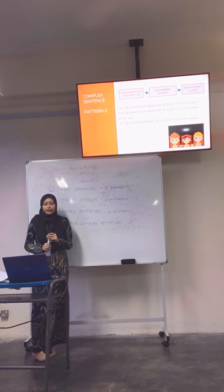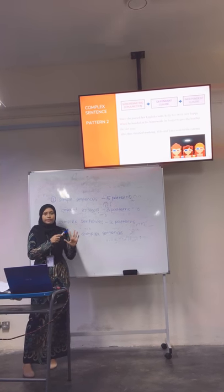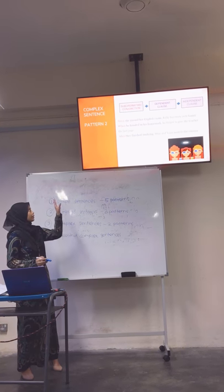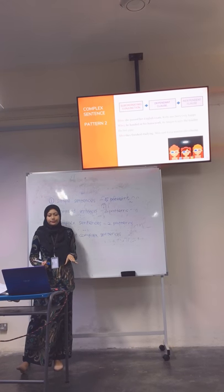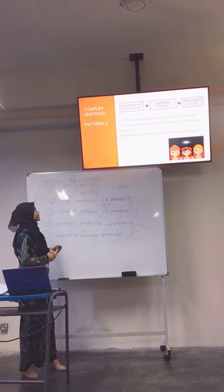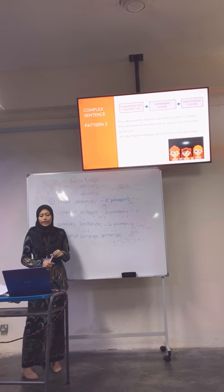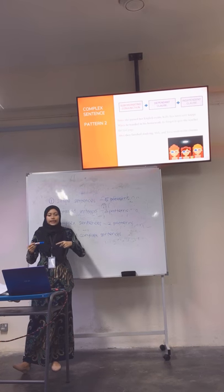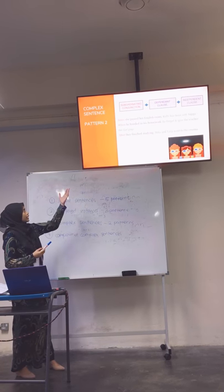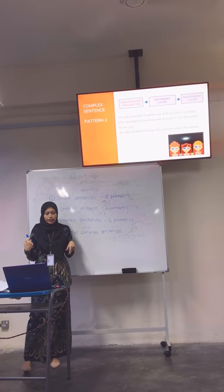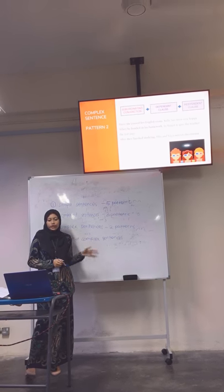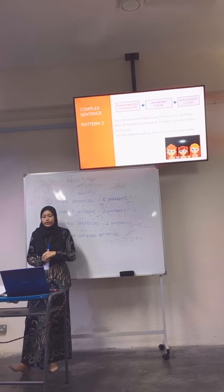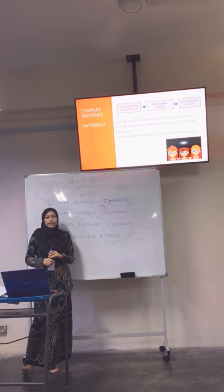Complex sentence pattern 2 consists of subordinating conjunction plus dependent clause plus independent clause. It is a little different because the subordinating conjunction is at the front. For example: 'Since she passed her English exam, Kelly has been very happy' — just twist the sentence by putting the subordinating conjunction at the front. Number 2: 'When he handed in his homework, he forgot to give her the last page.' Number 3: 'After they finished studying, Lila and Ayaya went to the cinema.'